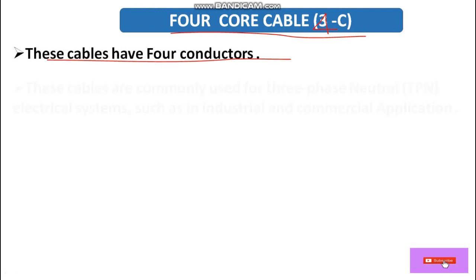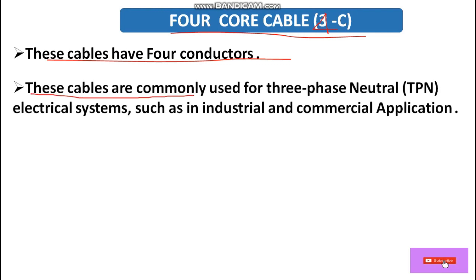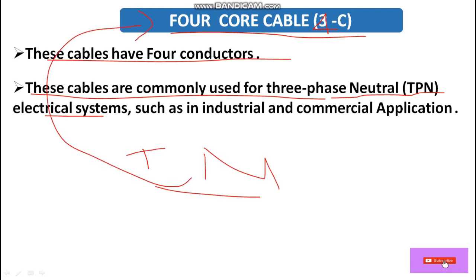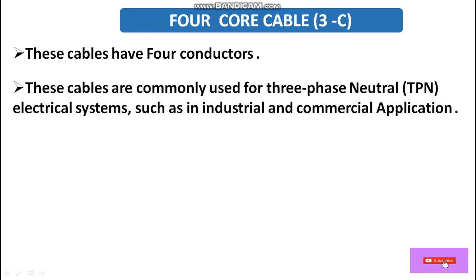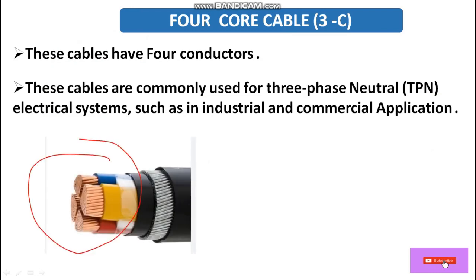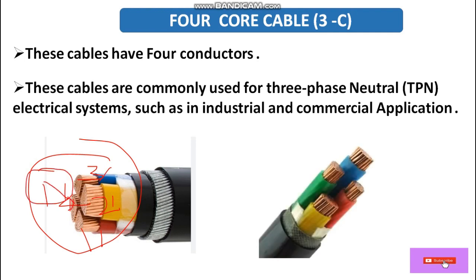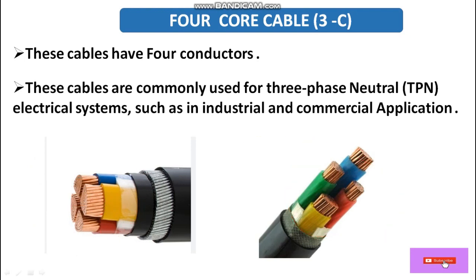Next, four core cable. This cable has four conductors. It is commonly used for a three-phase neutral system — also called a TPN electrical system — where we require three phases and one neutral. It is used in industrial and commercial applications. As you can see, R, Y, B and one neutral conductor.